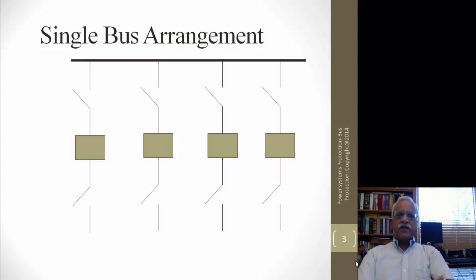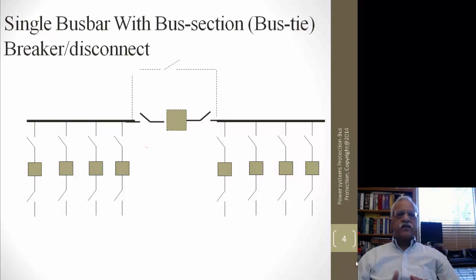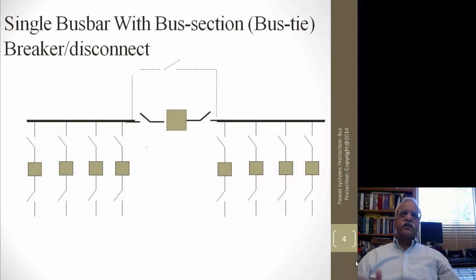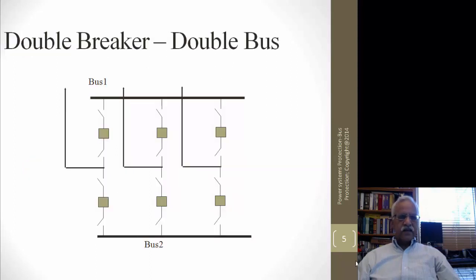The problem here is if there is a fault in the bus, we lose the connection from the source to the rest of the lines. To prevent this, you can split it into two single buses and connect them with a bus-tie breaker. Under such conditions you can isolate only the faulted section and still maintain supply for the remaining lines. The next arrangement is double bus double breaker.